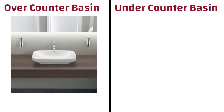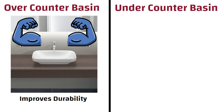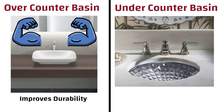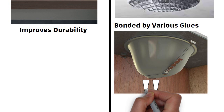Durability. The over counter basin is fixed on the counter top, so the firmness is very strong, which improves the durability. On the other hand, under counter basin is fixed under the hard material and bonded by various glues. Over a period of time, the wash basin runs the risk of falling off and the durability is average.